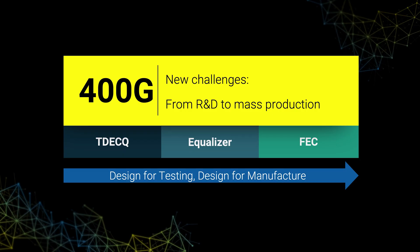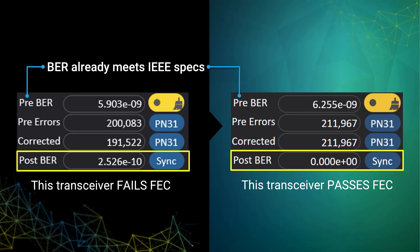The 400G transceiver is now moving from R&D to mass production. R&D is looking for better ways to transfer it to the production line. Traditionally, BER is the major indicator for qualifying transceiver performance. Even if the BER of a 400G transceiver is better than the IEEE requirement, there is still frame loss on the switch system.